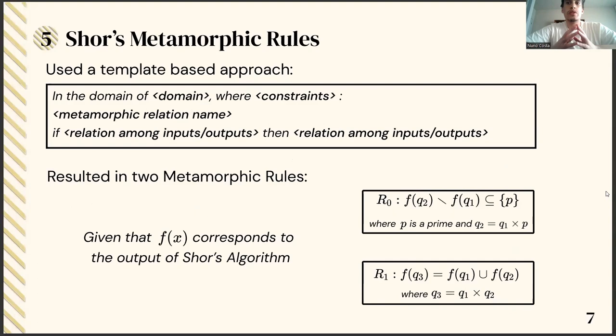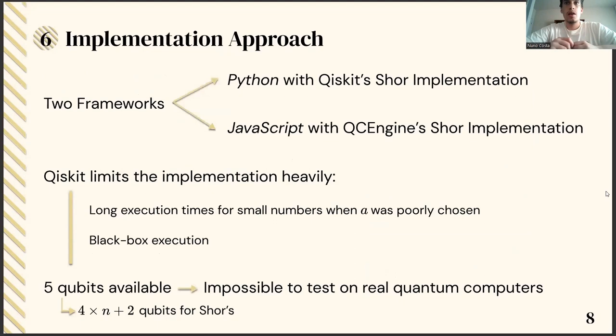To define the metamorphic rules for Shor's algorithm, we follow the template-based approach, which is defined in this slide. And after giving the algorithm some thought, we came up with two different rules. The first defines that for a given number q2 that is factored in q1 and the prime p, the result of Shor's on q2, except the result of Shor's on q1, should include the prime p. The second one defines that for a given number q3, factored in q1 and q2, the Shor's of q3 should equal the union of Shor's results of q1 and q2.